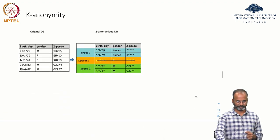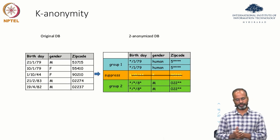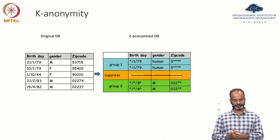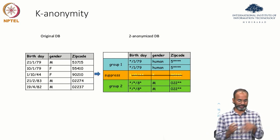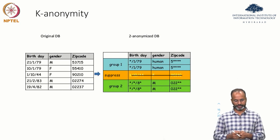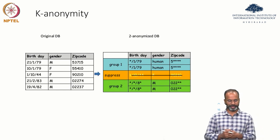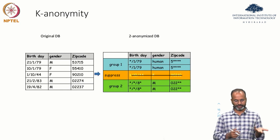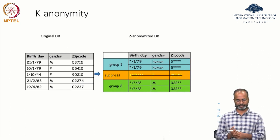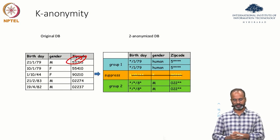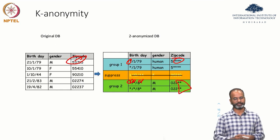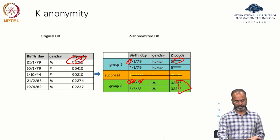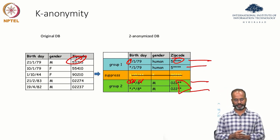Here's another example of two-anonymized data with columns: birth date, gender, and zip code — similar to what Latanya had. You can suppress one row (the third row), then make groups: in group one, suppress the day in the birth date and last four digits of the US zip code. In group two, suppress only the last two digits. Now you cannot distinguish between the two users in each group. That's k-anonymity's goal.